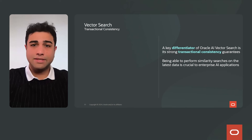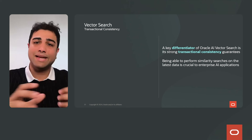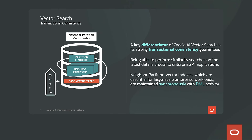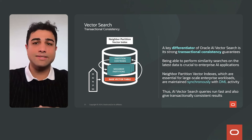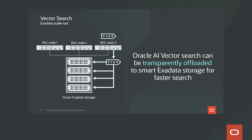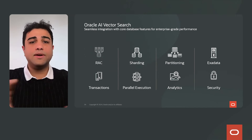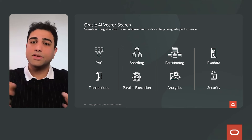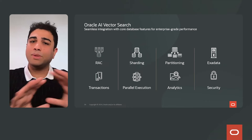A key Oracle differentiator is strong transactional consistency — neighbor partition vector indexes are fully transactionally consistent and maintained synchronously with DML, ensuring results are fast and consistent for enterprises. You can also scale out vector processing using RAC (Real Application Clusters) with full data consistency, offload vector processing to smart Exadata storage software for faster queries, and Oracle Vector Search is fully integrated with enterprise-grade features including sharding, parallel execution, partitioning, analytics, and security.